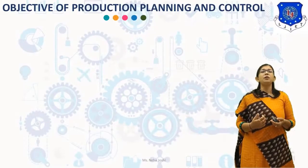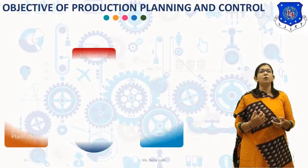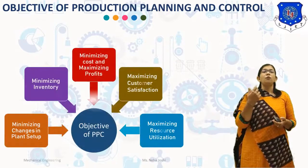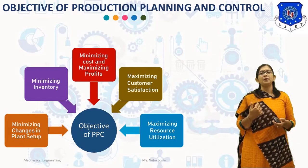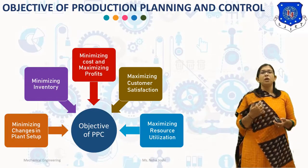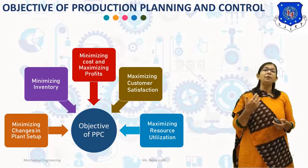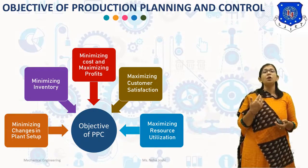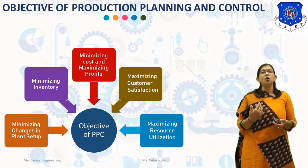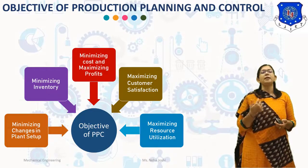Now we will discuss the objectives of Production Planning and Control. The first objective is minimizing cost and maximizing profits. The Production Planning and Control Department should aim at minimizing cost without compromising quality. This will automatically result in maximizing the profit.